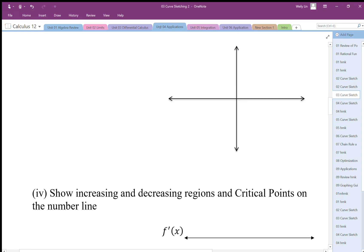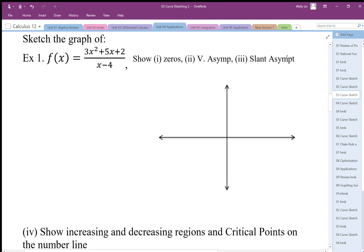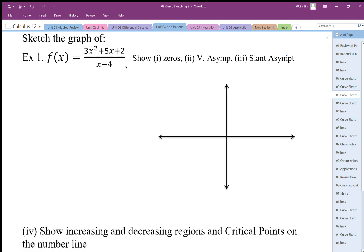When we look at graphing these functions, we're going to do the same things as we did in pre-calc 12. I want to find zeros, vertical asymptotes, and slant asymptotes.